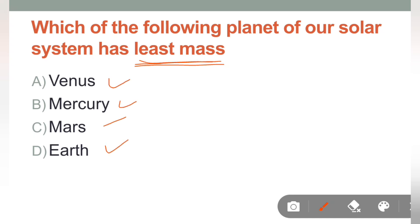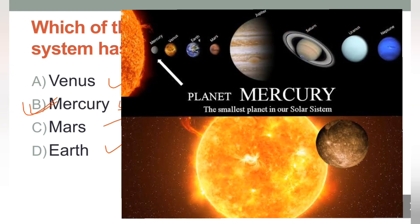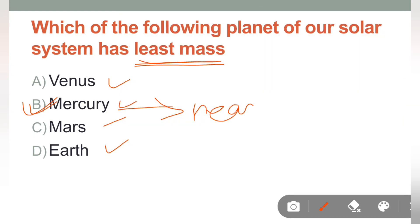Ab isme jo least mass hai, woh kis ka hai? Option B is the correct answer, that is Mercury. Mercury is the nearest planet to the sun. Ye nearest bhi hai sun ke. And also, sorry for the pen. Toh ye jo nearest planet hai sun ke.